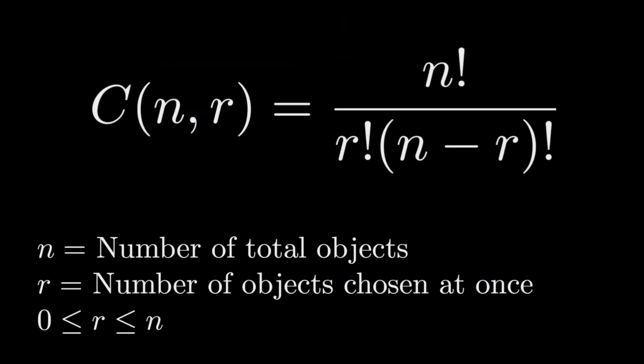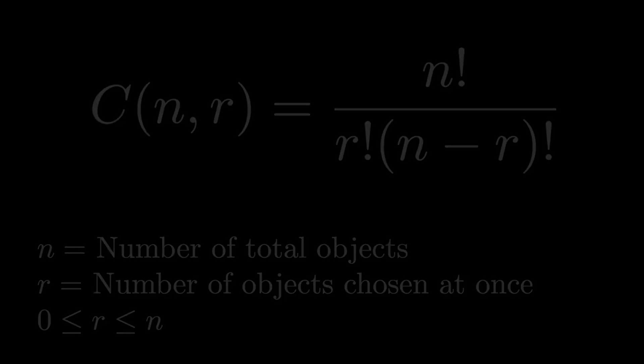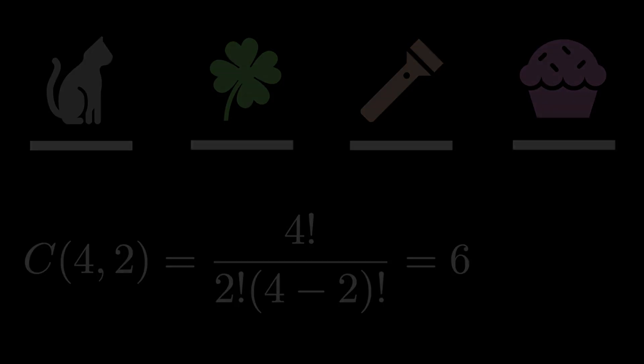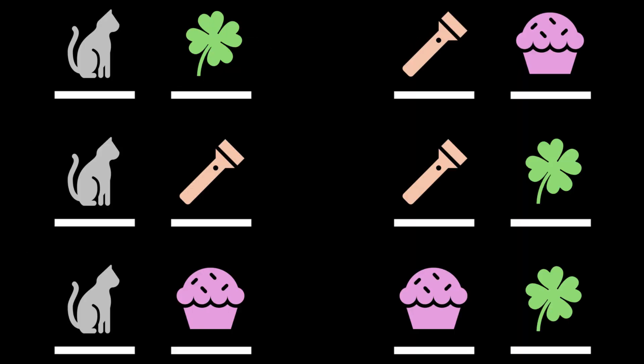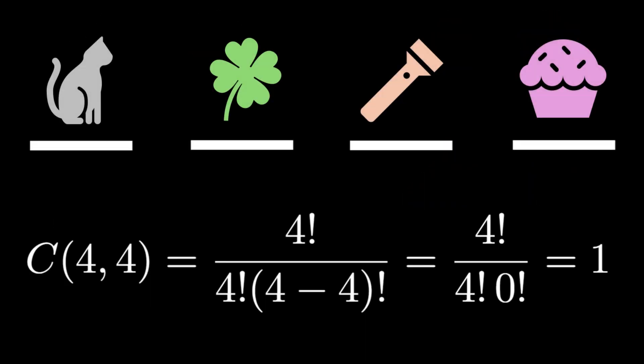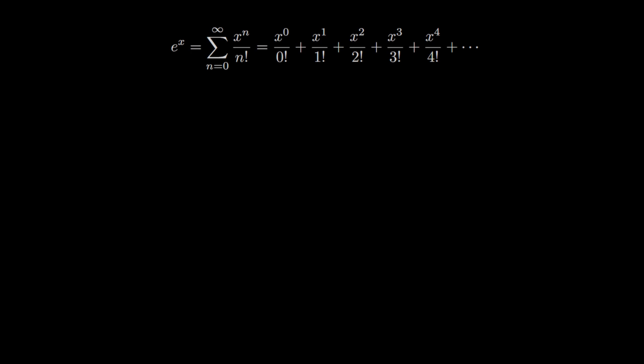The choose function calculates the number of ways to select r objects from a set of n distinct objects where the order of selection does not matter. So if we have four objects and we choose two, we find there are six ways to do so. If we choose all four objects, we get a result of one, and indeed there is only one way to choose all four objects.